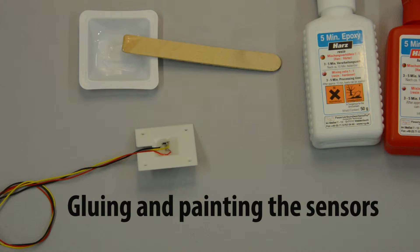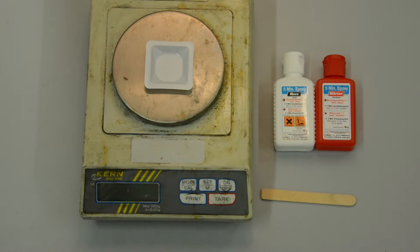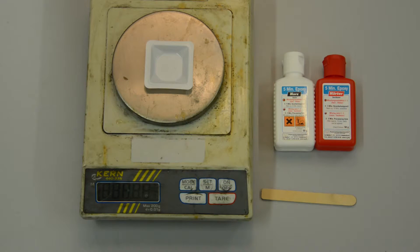Once you have ensured that the sensors are wired and working properly, they can be glued in place, and the light sensor should be painted. For glue, use epoxy or a hot glue gun.